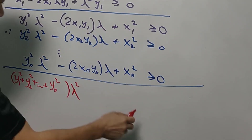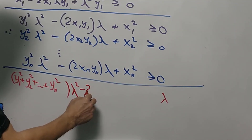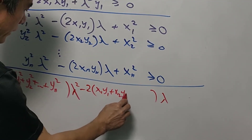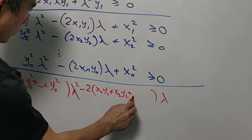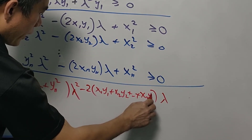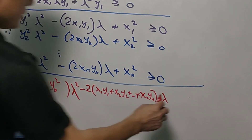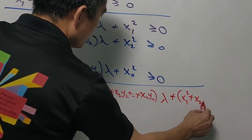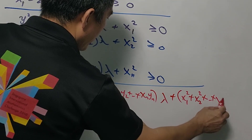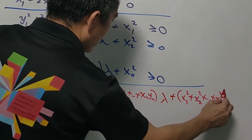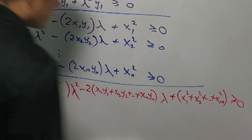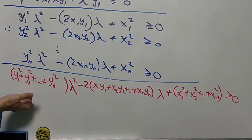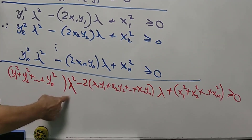The coefficient of λ will be 2(x1y1 + x2y2 + … + xnyn), and the constant term will be x1² + x2² + … + xn². Summing all these inequalities gives a combined expression that is greater than or equal to zero. We should now focus on this quadratic expression in lambda.